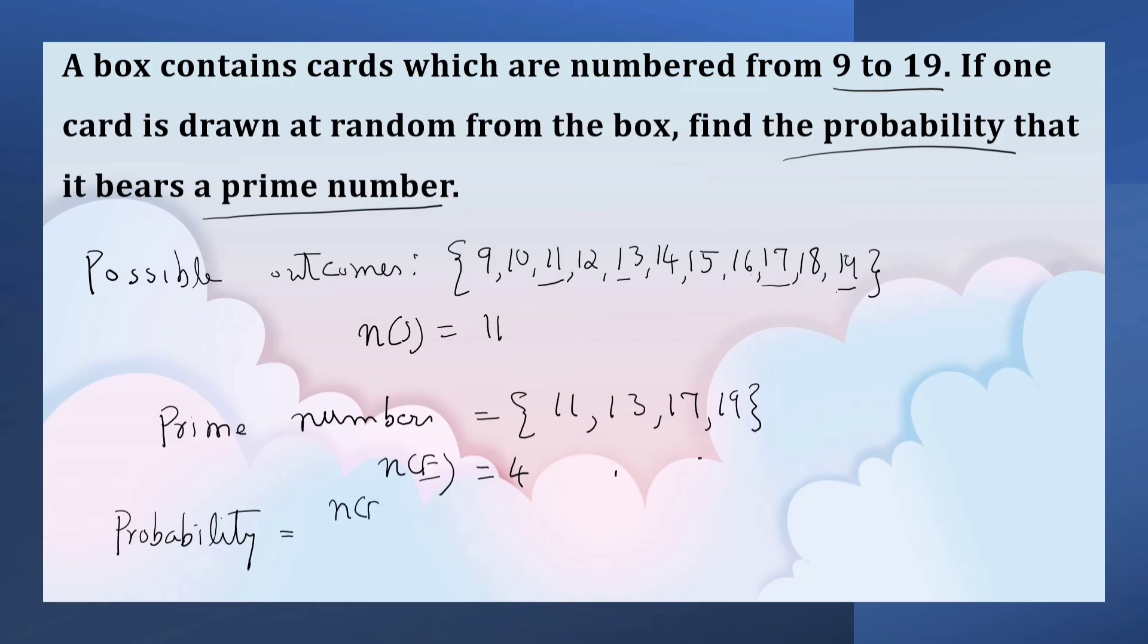Probability equals number of E upon number of S. Number of E is 4, number of S is 11. So, 4 by 11.